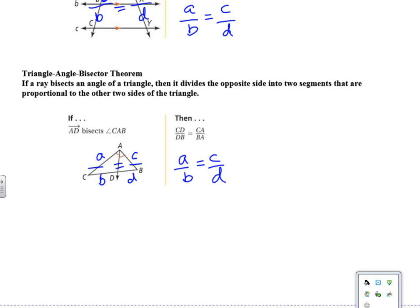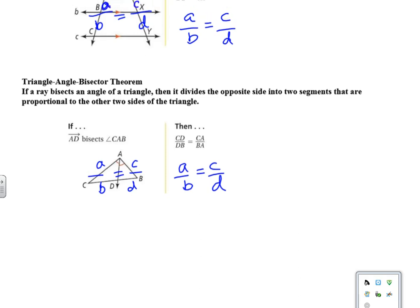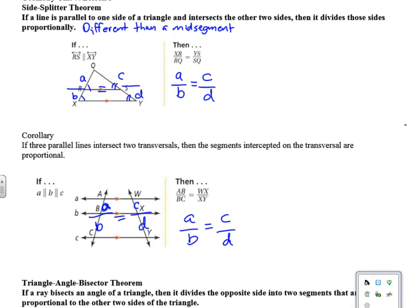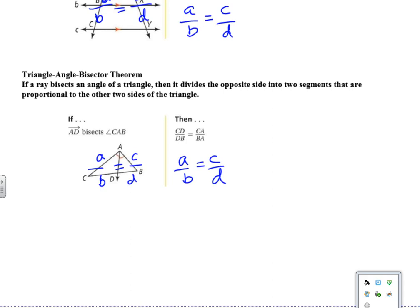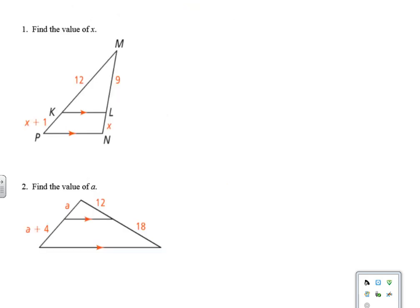Okay, so we got a whole bunch of situations where it's proportional. Again, the first one is the side splitter theorem, so it's parallel to that side. The second one is three parallel lines with two transversals, and the last one is the triangle angle bisector theorem. So we have a triangle with an angle bisector, we've got proportional sides. Alright, so let's go ahead and look at this.